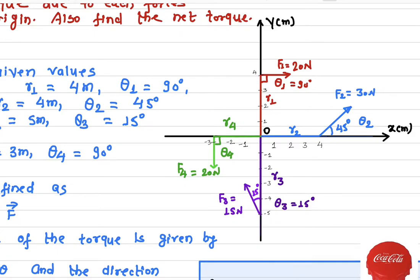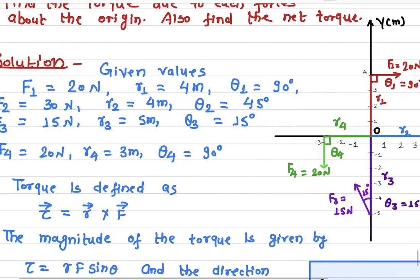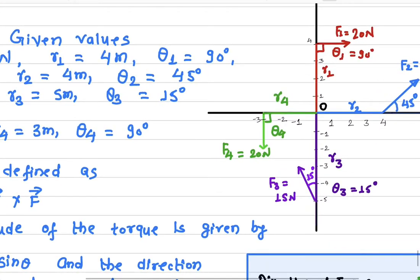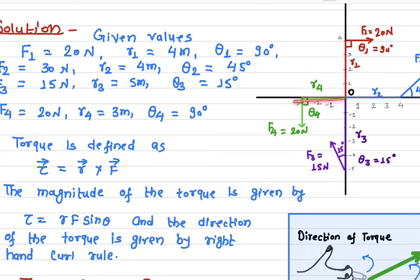Remember, torque is a vector quantity. Here all the information is given — the force and the radius. R1 is 4 meters, as you can see from this graph. R1 is the distance from the point where the force is applied to the origin or the axis of rotation. Similarly, R2 is 4, R3 is 5, and R4 is 3.